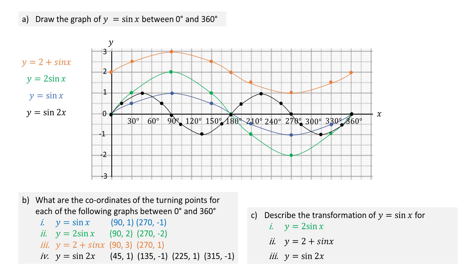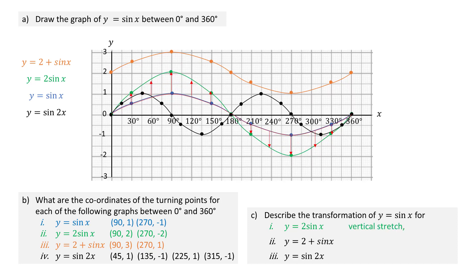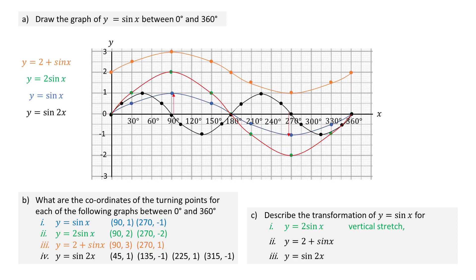Describing the transformation which maps y equals sine x onto y equals 2 sine x: each point on y equals sine x which is above the x-axis moves vertically upwards, and each point which is below the x-axis moves vertically downwards. So the transformation is a vertical stretch, with each point on y equals sine x doubling its distance from the x-axis, giving a stretch factor of 2.